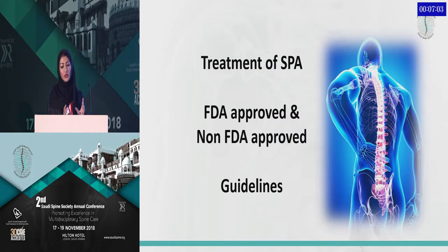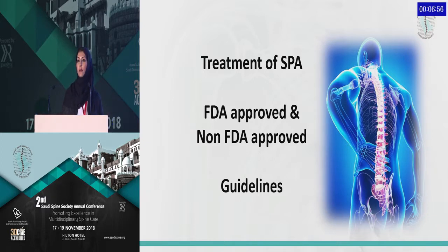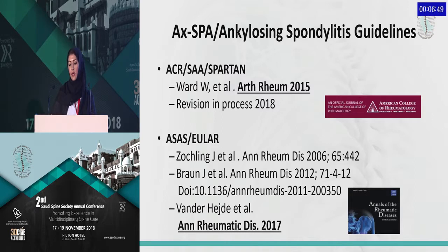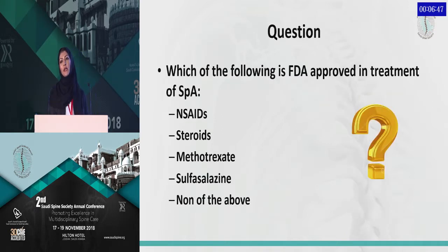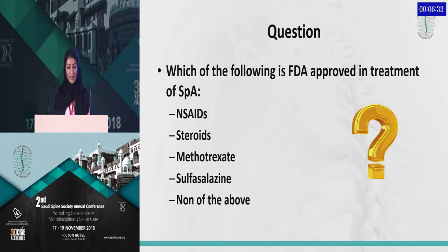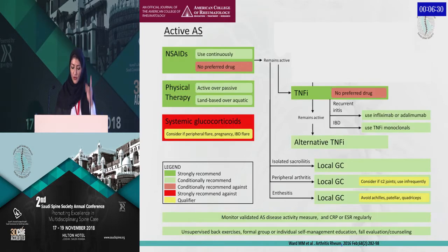Let's go over quickly the treatment of spondyloarthropathy — both FDA-approved, non-FDA-approved, and what the guidelines recommended over the past month. We have the American College of Rheumatology guidelines and the European guidelines as well. So, a brainstorming question: which of the following is an FDA-approved treatment for spondyloarthropathy? Is it NSAIDs, steroids, methotrexate (a DMARD), sulfasalazine, or none of the above? Just keep it in your mind.